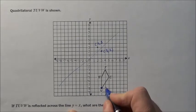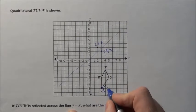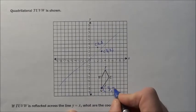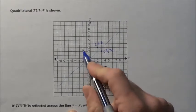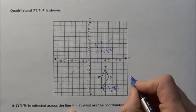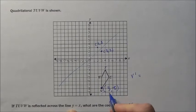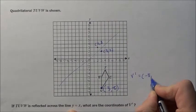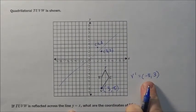So if V is located right here as it is at 3, negative 8, when I flip it across this line V prime is going to end up just flip that at negative 8, 3. And that's going to be our option.